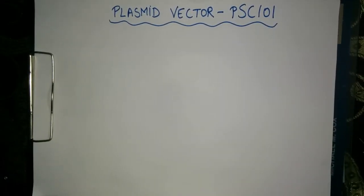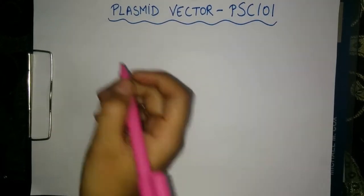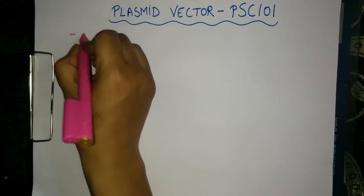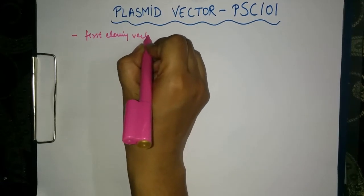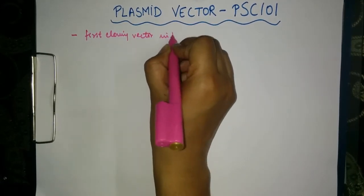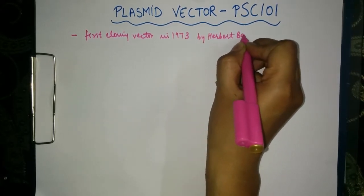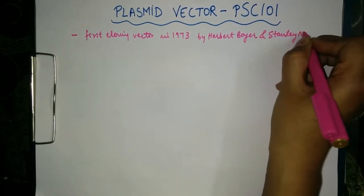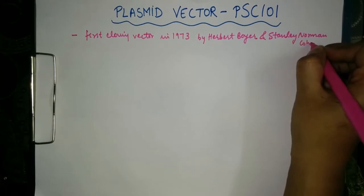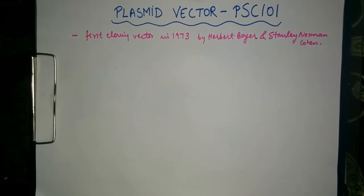In this tutorial, we are going to discuss about a plasmid vector PSC101. PSC101 was the first cloning vector used in 1973 by Herbert Boyer and Stanley Norman Cohen. They demonstrated that a gene from a frog could be transferred into bacterial cells and then expressed by a bacterial cell.